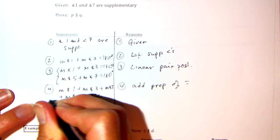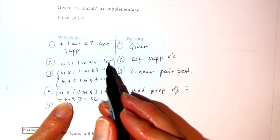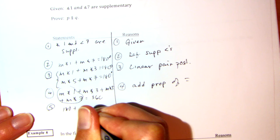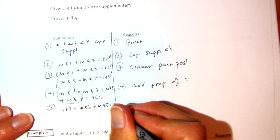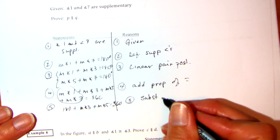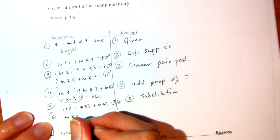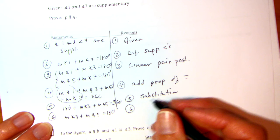Number 5: angle 1 plus angle 7 equals 180, so I'm going to substitute that in. 180 plus measure of angle 3 plus measure of angle 5 equals 360. Substitution. Then I subtract 180 on both sides: measure of angle 3 plus measure of angle 5 equals 180. Subtraction property of equality.